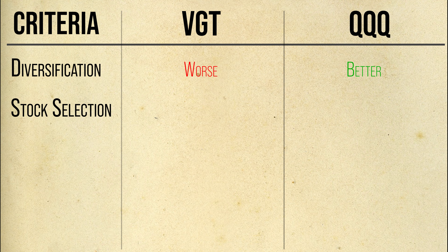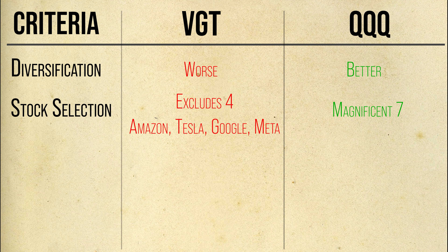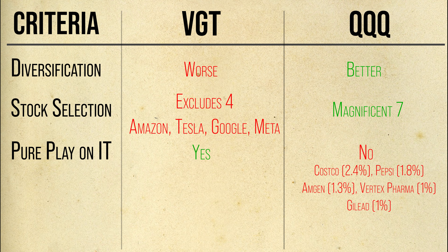Next is stock selection preference. QQQ gives you exposure to all of the Magnificent Seven stocks. Conversely, VGT excludes four of them — Amazon, Meta, Google, and Tesla. So if you want to hold all seven stocks, VGT is not for you. But if you want a pure play on the technology sector, VGT is a better choice. As we saw, QQQ provides exposure to other sectors besides tech — for instance, it has holdings in Costco and PepsiCo, which are consumer-defensive stocks. Likewise, QQQ holds Amgen, Vertex Pharmaceuticals, and Gilead Sciences, giving healthcare exposure.